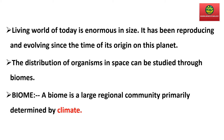Primarily کا مطلب ہوتا ہے mainly، اور climate سے مراد environment اور weather ہے۔ Biome ایک large regional community ہوتی ہے جو ایک particular area میں رہتی ہے۔ اگر ہم اس definition کو سادہ الفاظ میں سمجھیں تو جیسے ہم کسی نئی جگہ جاتے ہیں تو سب سے پہلی priority ہوتی ہے کہ وہاں کا climate، environment اور weather کیسا ہے۔